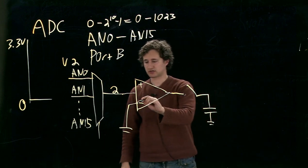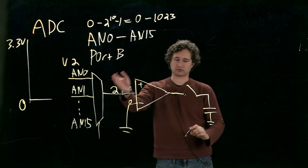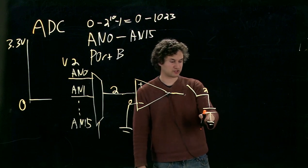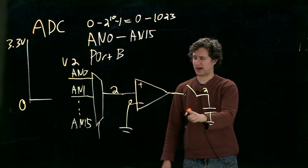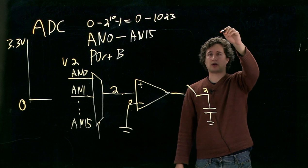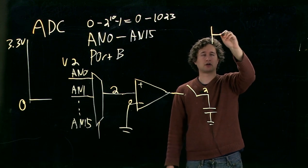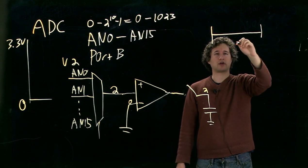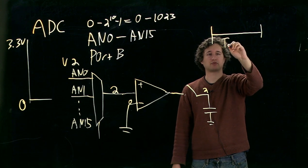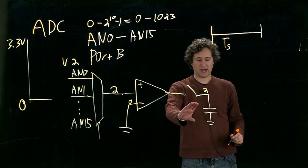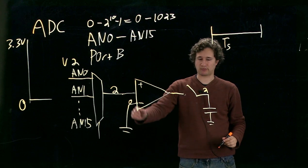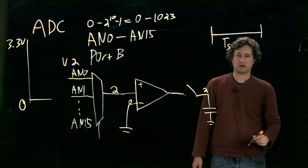But since this signal is 0 volts, we want it to reach the value here of 2 volts. Typically this is a really small capacitor, so this happens really quickly. And we need to make sure that the sampling time, Ts, is long enough so that this capacitor can be charged to the proper value.